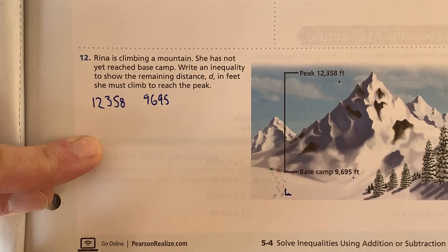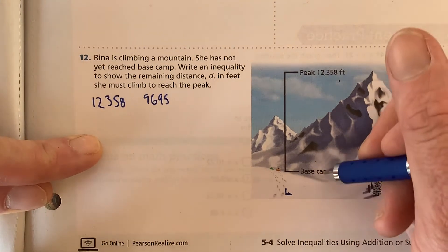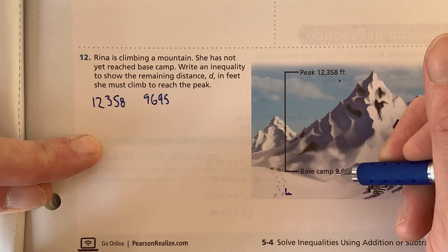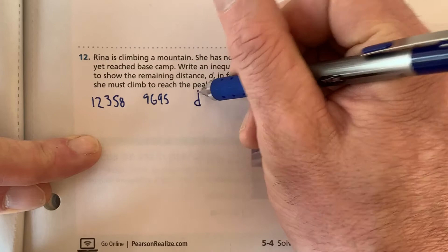Then we also know that we need to find, we haven't reached base camp yet. So we're going to have to figure out the total distance, which will be d.